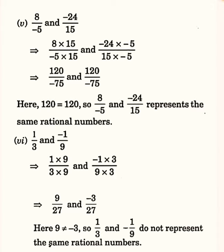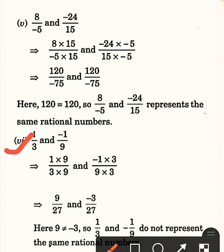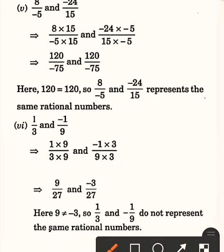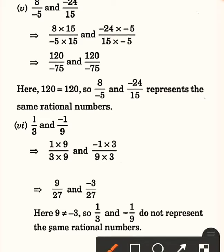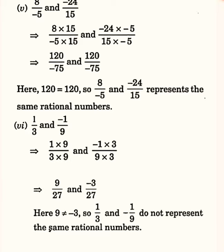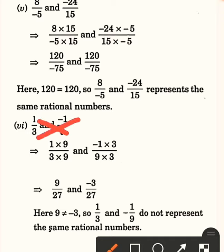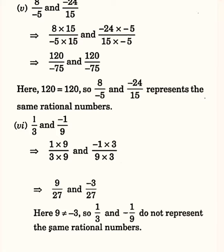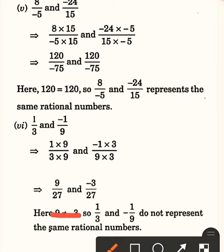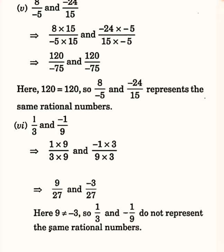Moving ahead with the sixth question: 1 upon 3 and minus 1 upon 9. Cross multiplication: 1 into 9 gives 9 upon 27, and minus 1 into 3 gives minus 3 upon 27. Comparing: 9 is not equal to minus 3. So 1 upon 3 and minus 1 upon 9 do not represent the same rational numbers.